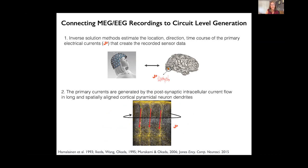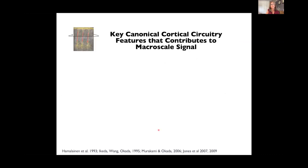The length of these dendrites and their aligned orientation creates a net summed current that's very large and creates an electric and magnetic field that can be recorded outside of the head with our sensors. Given that this is where the signal comes from, there are some canonical features of neocortical circuitry that we need to take into consideration in our models if we want to study the circuit-level generators of these macroscale signals.